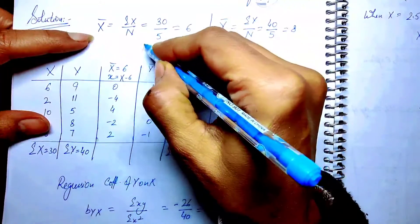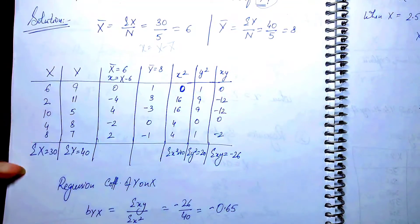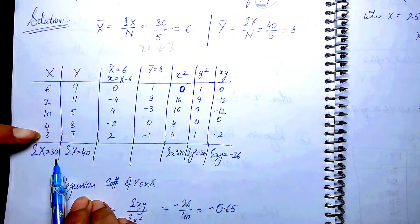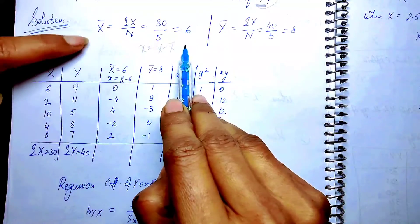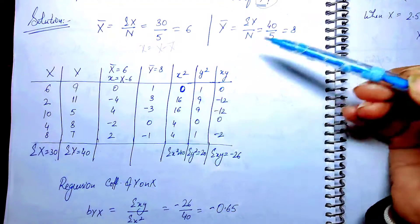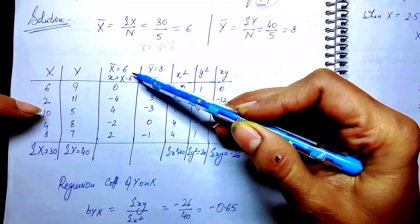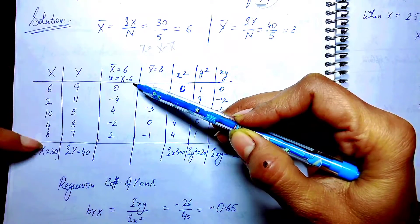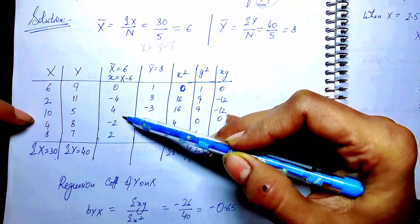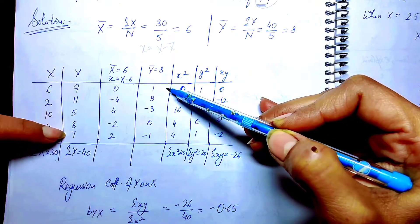First we write the x minus x-bar values. To find x-bar, the summation of X is 30. The number of terms is 1, 2, 3, 4, 5, so the mean is 6. For Y, the total is 40, so Y-bar = 40 divided by 5 = 8. So x = X minus 6, and y = Y minus 8. After subtracting, we get the small x and small y deviation values for each term.